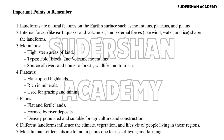Plateaus are flat-topped highlands rich in minerals, used for grazing and mining. Plains are flat and fertile lands formed by river deposits, densely populated and suitable for agriculture and construction. Different landforms influence the climate, vegetation, and lifestyle of people living in those regions. Most human settlements are found in plains due to ease of living and farming.